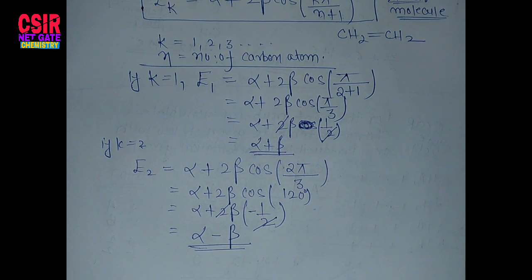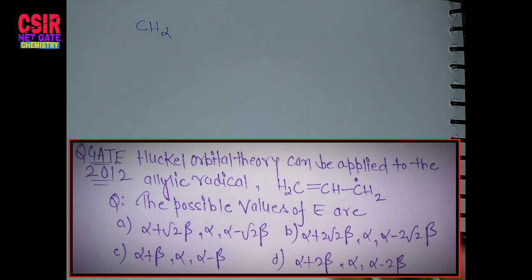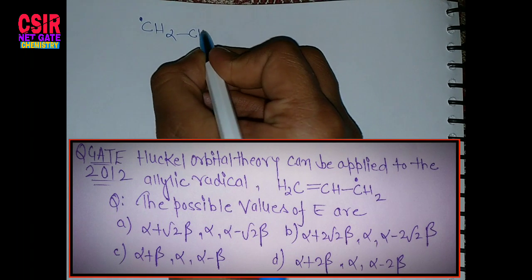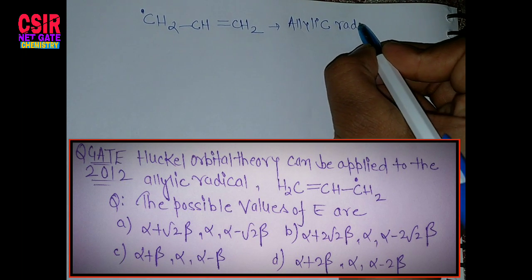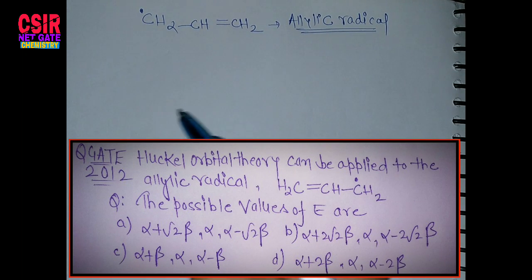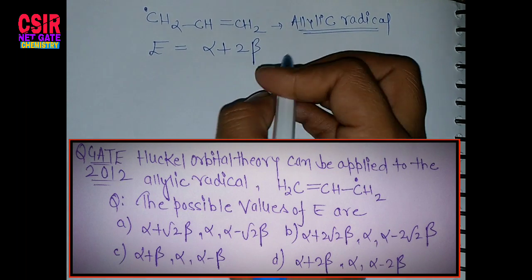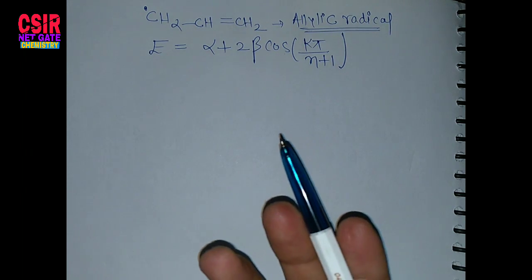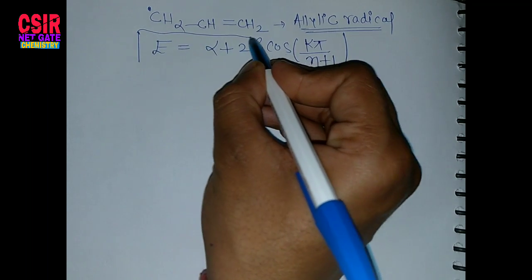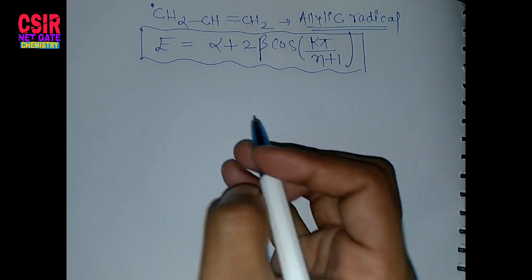Let me take one more example — the allylic radical, which is CH₂–CH–CH₂ radical. Using the same formula: E = alpha plus 2 beta times cos(k·π / (n+1)). Here n equals 3 because we have 3 carbon atoms, so we will have 3 energy values.